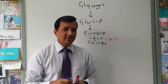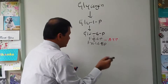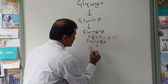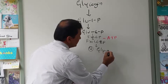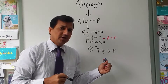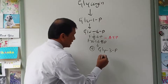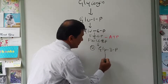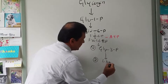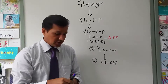Fructose-1,6-bisphosphate is a 6-carbon molecule, and it is split into two molecules of glyceraldehyde-3-phosphate. These two molecules of glyceraldehyde-3-phosphate then undergo a reaction catalyzed by glyceraldehyde-3-phosphate dehydrogenase to become two molecules of 1,3-bisphosphoglycerate.